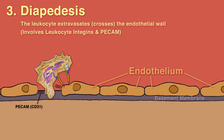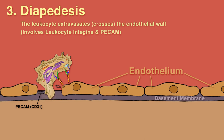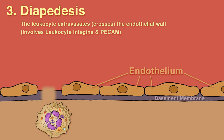Next, the leukocyte penetrates the basement membrane with the aid of enzymes that break down extracellular matrix proteins. The movement through the basement membrane is known as diapedesis, and once the leukocyte has crossed it, it is now in the subendothelial tissues.